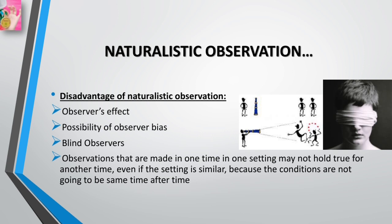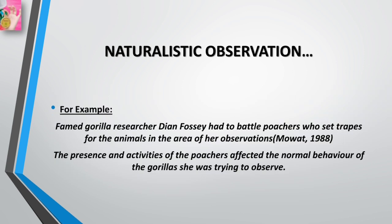For example, famed gorilla researcher Dian Fossey had to battle poachers who set traps for the animals in her observation area. The presence and activities of the poachers affected the normal behavior of the gorillas she was trying to observe, illustrating how outside factors can compromise naturalistic observation.